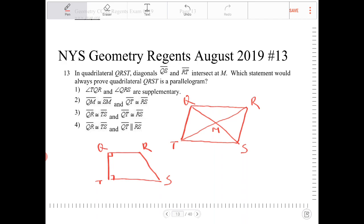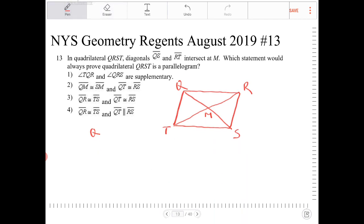So again TQR and QRS, let me redraw that. So it should look something like this. So again TQR and QRS, they are supplementary, however this is not a parallelogram.